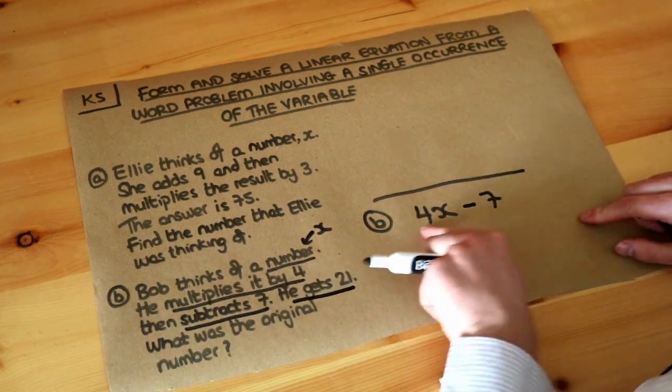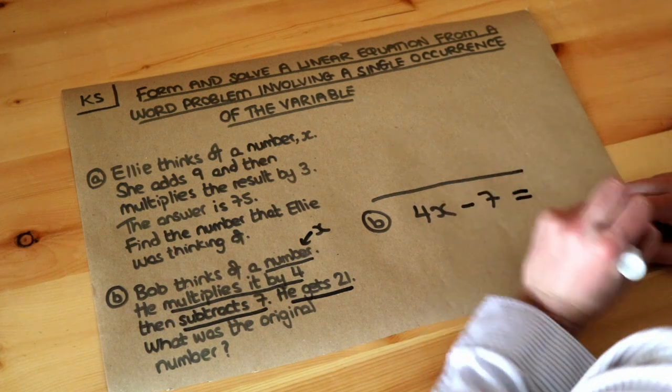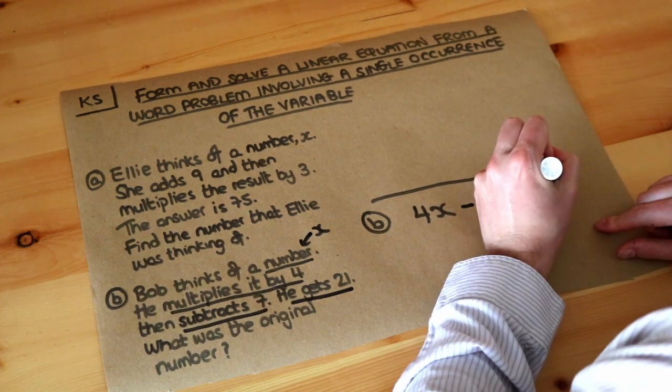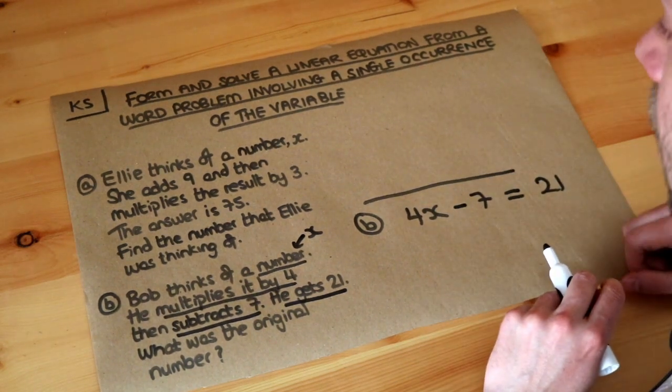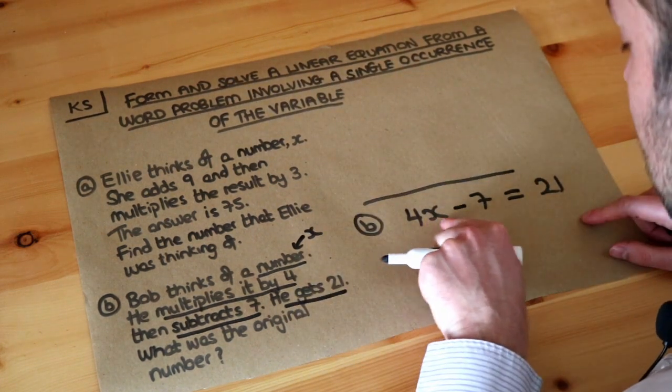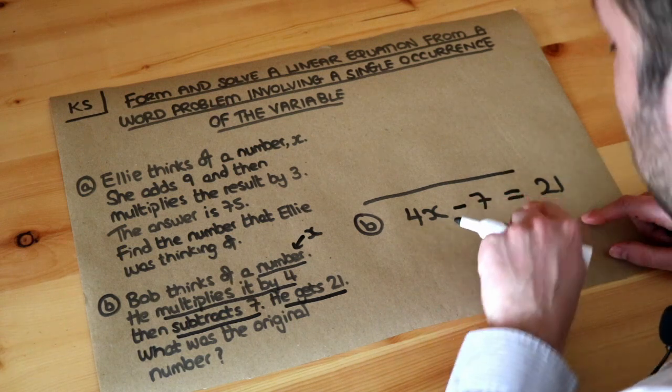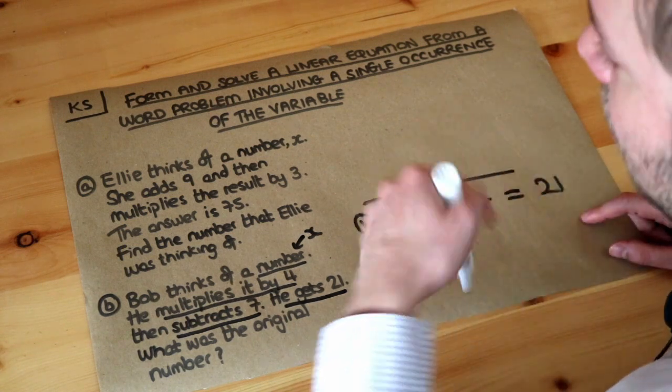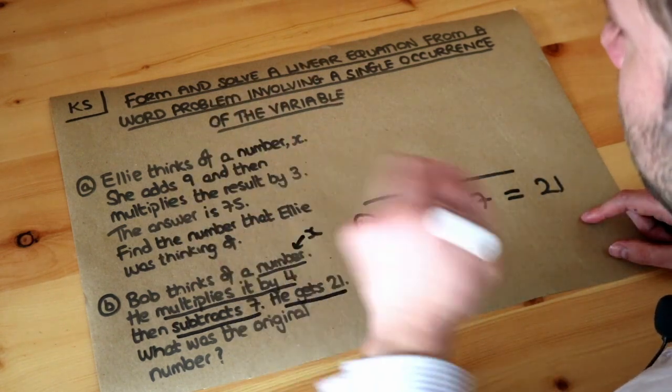21. So that result is equal to 21. We now have an equation: 4x - 7 = 21. It's called a linear equation because we only have x terms and numbers known as constants, but we don't have x squared, x cubed, or more complicated things like that.